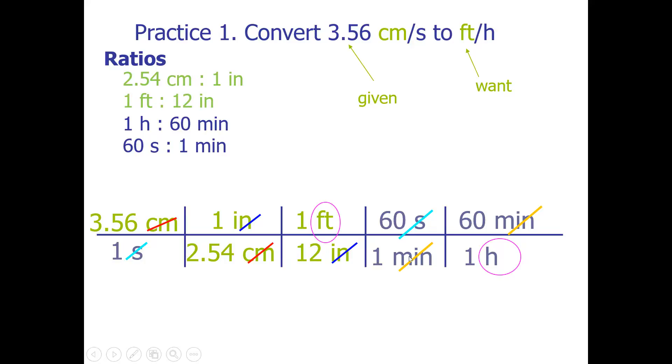In the calculator you want to type in 3.56 divided by 2.54 divided by 12 times 60 times 60. And when I do that, here's the answer I get, and then my units feet per hour.